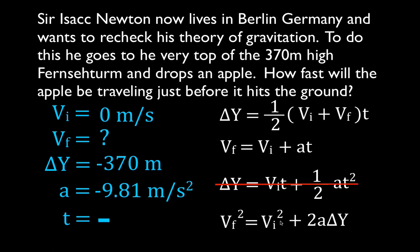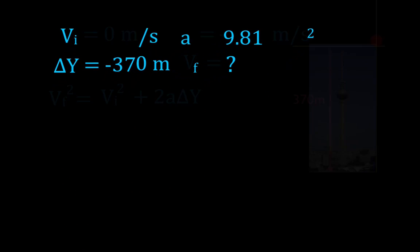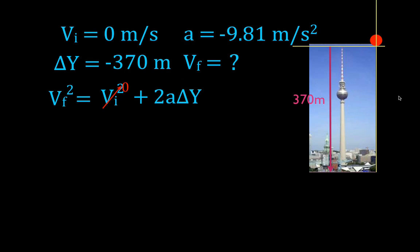The other three do. The other thing you'll notice is that this equation and this equation has the time in it, and we don't know the time. We can't use either of those. That means this is our magic equation for this problem. So now we're going to use this equation, and we're going to go to the next slide.